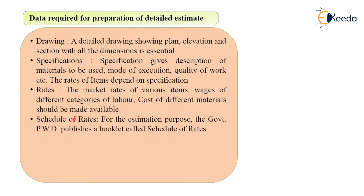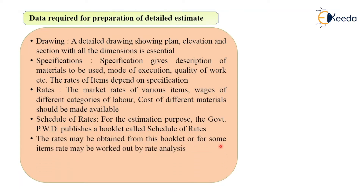Then you need the schedule of rates. Schedule of rates is a book published by the PWD department or any other government department for estimation purposes. You will need the DSR - in short it is known as the DSR book. It is a booklet published by the government PWD. After finding the detailed quantities of various items of work, you will multiply them by the rate, so rates available in this booklet - the schedule of rates or DSR book - will be needed. Rates may be obtained from this booklet for various items of work and may be worked out at the time of rate analysis.